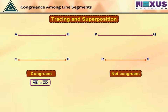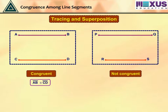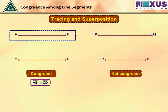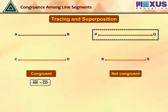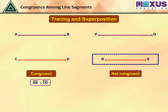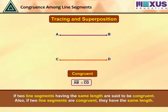We notice that from both pairs of line segments, line segment AB matched with CD as they had the same length, while PQ and RS did not. So, if two line segments have the same, that is equal length, they are congruent. Also, if two line segments are congruent, they have the same length.